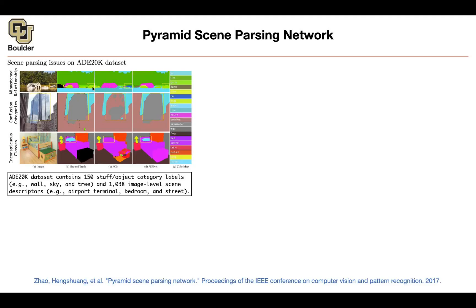This is a boat — the ground truth is a boat — but the fully convolutional network predicts it as a car. That's a mismatched relationship, showing confusion among categories. That's a skyscraper according to the ground truth, but the FCN confuses it with a building. You can also have inconspicuous classes: that's a pillow, but the fully convolutional network doesn't see the pillow and just sees the entire bed.